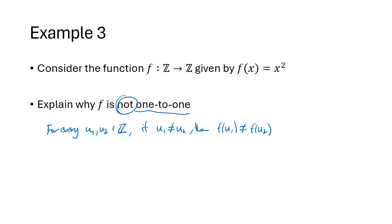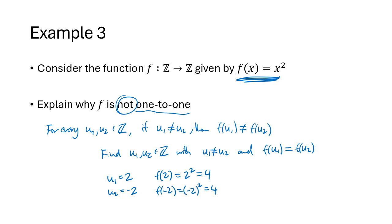So to show that a function is not one-to-one, we need to find a counterexample. So we need to find a u1 and a u2 that are both integers, with the hypothesis being true, which would mean that u1 is not equal to u2, and the conclusion being false, which means that f(u1) actually does equal f(u2). So can we think of two different integers, but when we square them, we get the same result? For example, u1 equals 2, u2 equals negative 2, but f(2) is 2 squared, which is 4, and f(-2) is negative 2 squared, which is also 4. So this would be my counterexample to show that this function is not one-to-one.